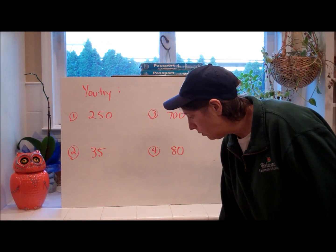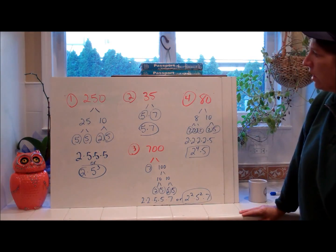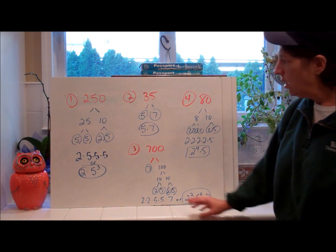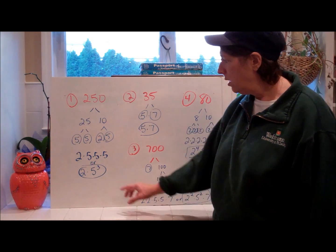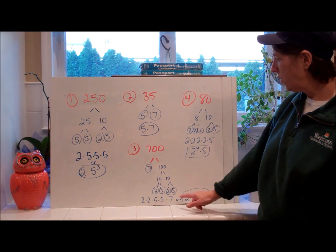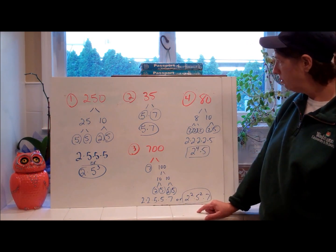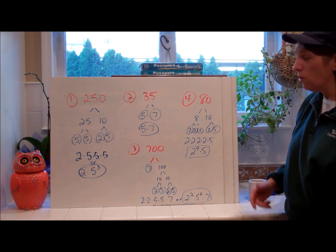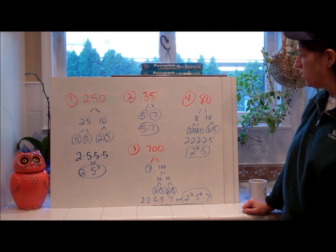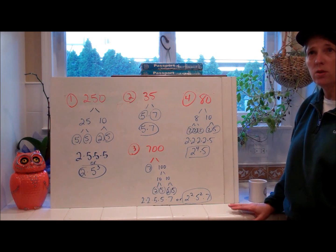Welcome back! I hope you did well and used your divisibility rules — it goes so much quicker. The first one ends in zero, so 10 goes into both. The answers: the first is two times five cubed (exponential form). Thirty-five is five times seven. The third is two squared times five squared times seven. Eighty: 100 goes into that — or use 2 or 4. Hopefully you picked the larger number because it's less work. It came out as two to the fourth times five. Pause to write your corrections if needed.